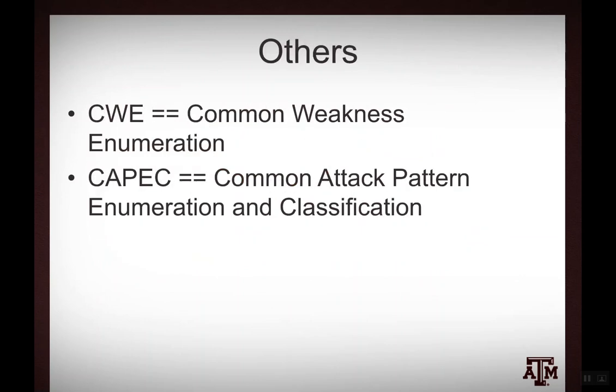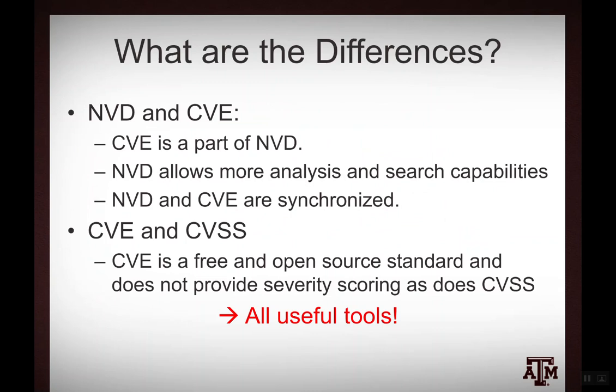There are others out there — a Common Weakness Enumeration, a Common Attack Pattern Enumeration classification, and so on — but I just want you to concentrate on those three. CVE is a part of the NVD. NVD allows more analysis and search capabilities, but they are synchronized — when we were on the CVE page, it referred back to the NVD. CVE is a free and open-source standard from MITRE, but it doesn't provide the severity scoring as CVSS does. They all provide different aspects of the information, and you need to be familiar with all three.